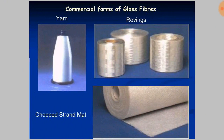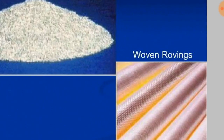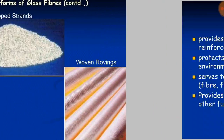The commercial forms of glass fibers include yarn, rovings, chopped strand mat, chopped strands, and woven rovings.